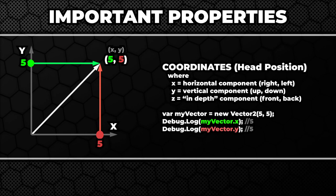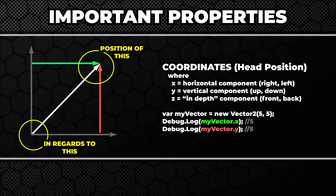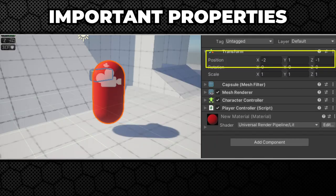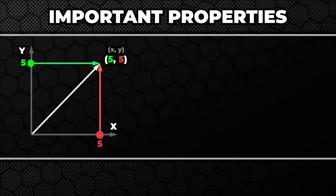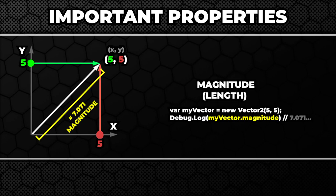They represent the position of the head in regards to the start of the vector. For example, a game object's position is described as three coordinates x, y and z. And that's the position of the end of the vector starting at the 0, 0, 0 position.